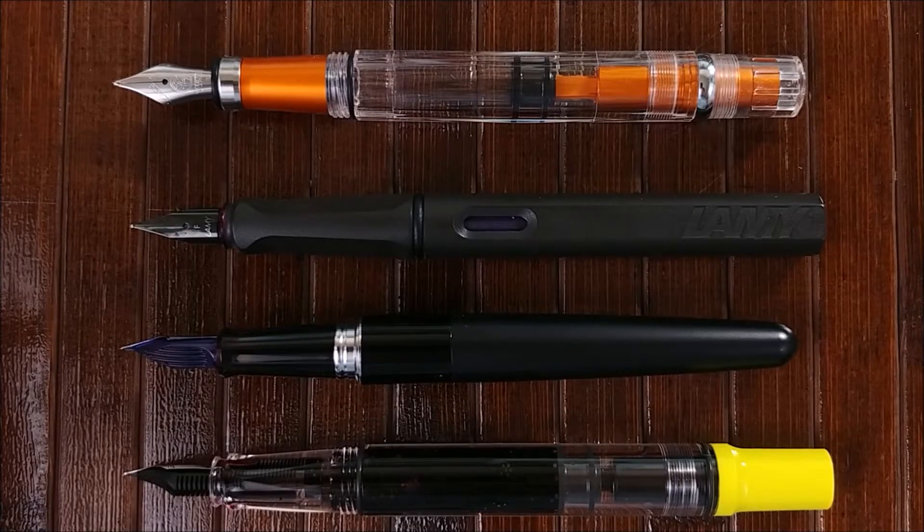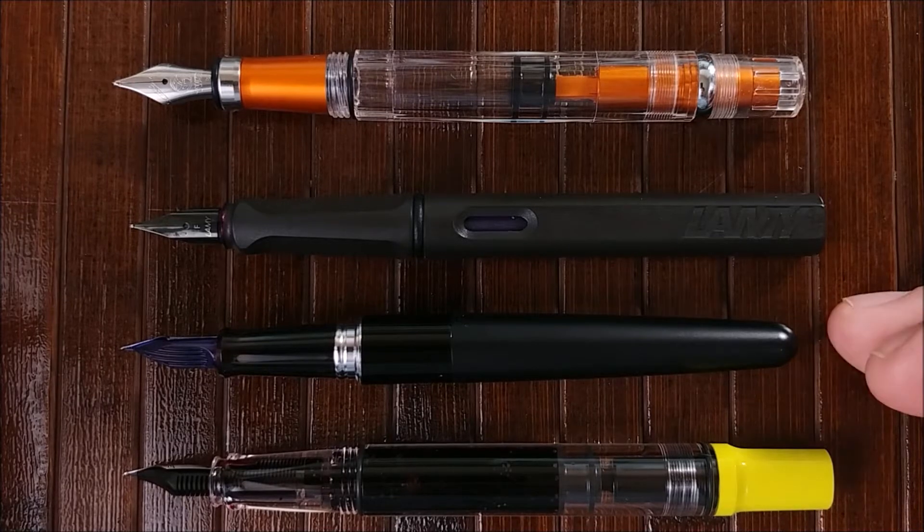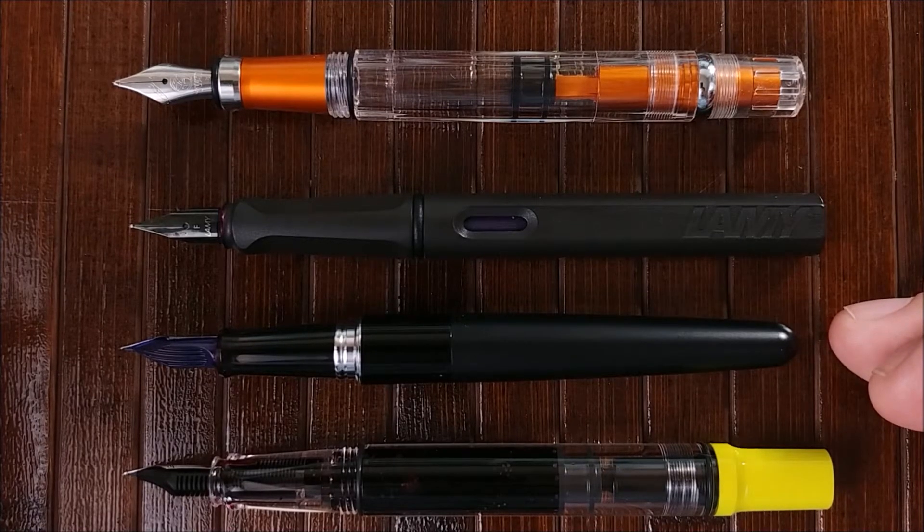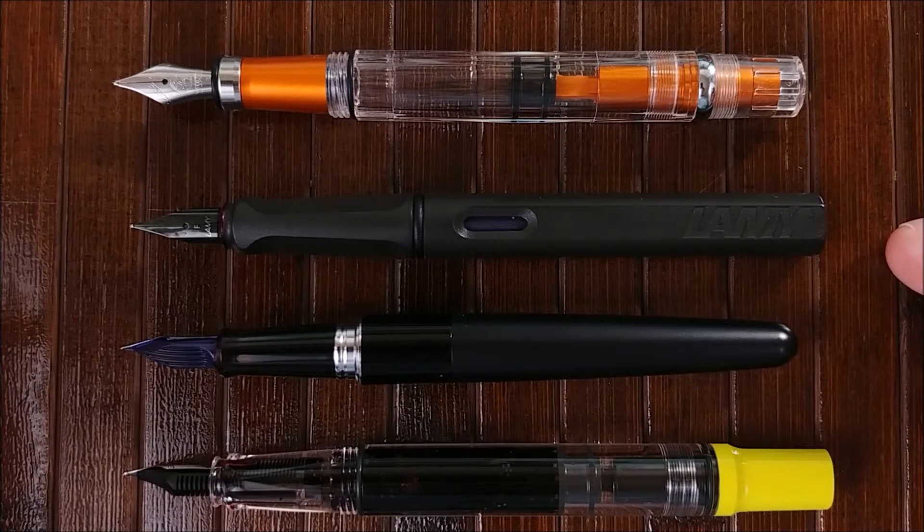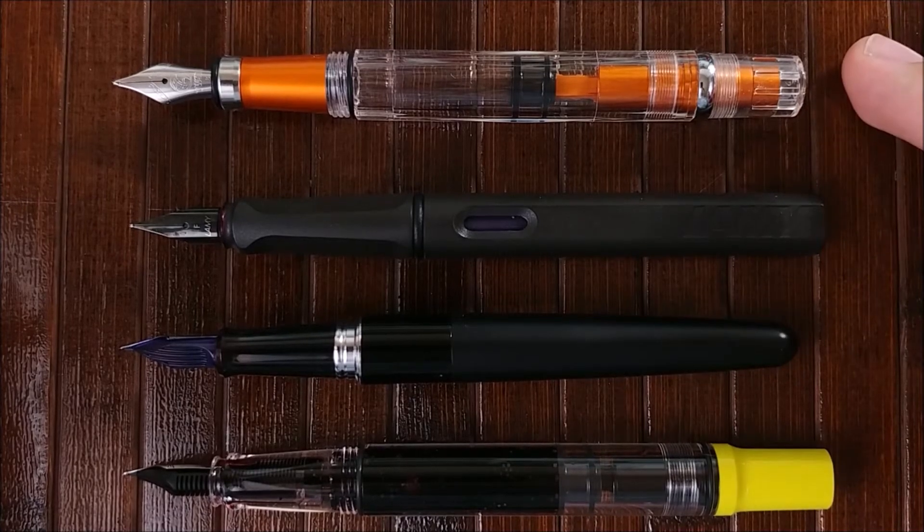Here's an uncapped size comparison. So you can see, again, it's bigger than the Metropolitan, about the same length as the Safari, and a little bit longer than the 580 All.